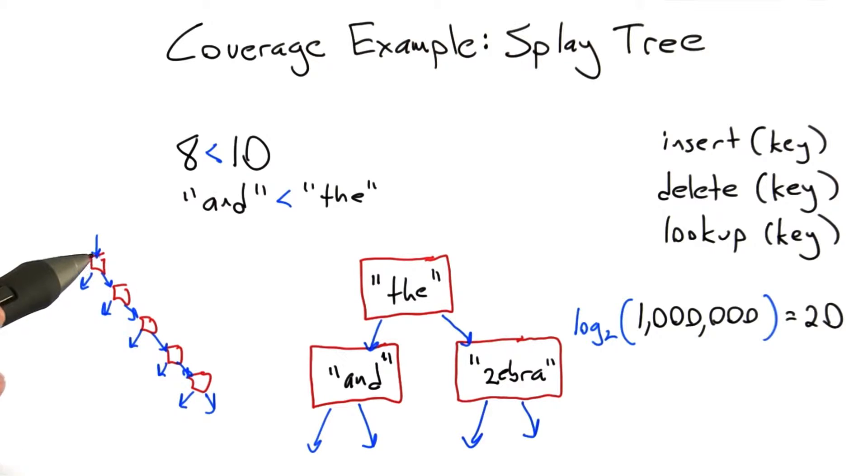Because here, to do a lookup, we're going to have to look at all of the nodes in the tree, and we've lost this nice logarithmic property that made lookups, inserts, and deletes extremely fast.